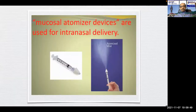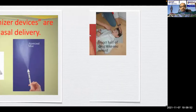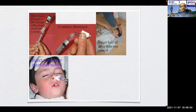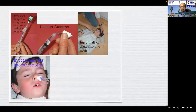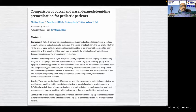The mucosal atomizer device is used for intranasal delivery. Connect to atomizer, inject half the drug into one nostril, and inject the remainder into the other nostril. A study comparing buccal and nasal dexmedetomidine for premedication found that intranasal administration of 1 mcg/kg is more effective than buccal administration of 1 mcg/kg.